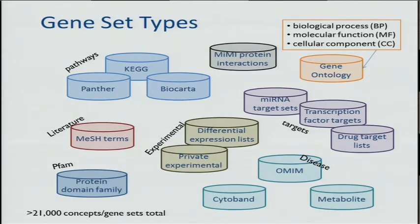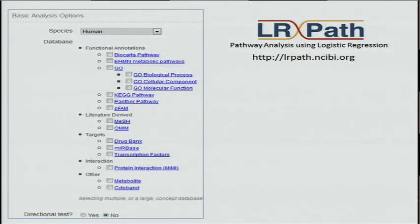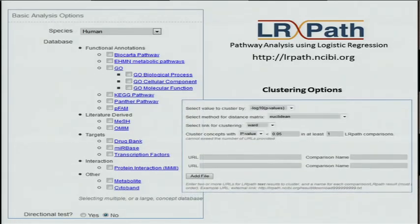Here are the different types of gene sets available to test with LRPath, listed in the user interface along with additional options. For clustering, the user has the option for several different clustering methods as well as different options for filtering which concepts they want to look at.